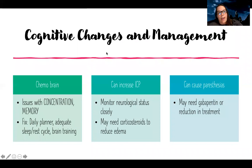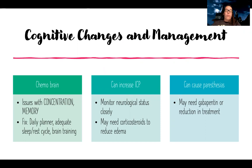Let's start with the head — cognitive changes. One fairly common thing that can happen is what's called chemo brain. Patients with chemo brain can have issues with concentration or memory. We can help them by encouraging them to have a daily planner, adequate sleep and rest cycle, and some brain training like doing games and puzzles to stimulate their brain.